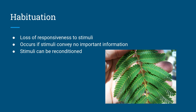Habituation is learning to lose responsiveness to a stimulus. For example, the plant shown — its leaves will curl up if you touch it, but if you touch it too many times, it will stop curling up because it realizes that each stimulus of being touched doesn't convey important information, so it just stops responding. However, the stimulus can be reconditioned and habituation can be undone, so eventually it would start curling up again.